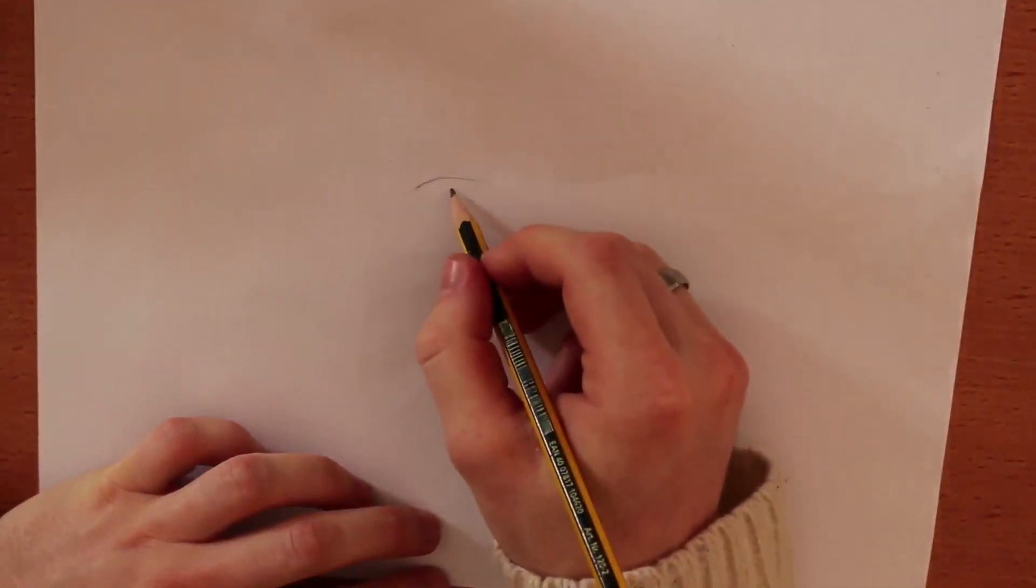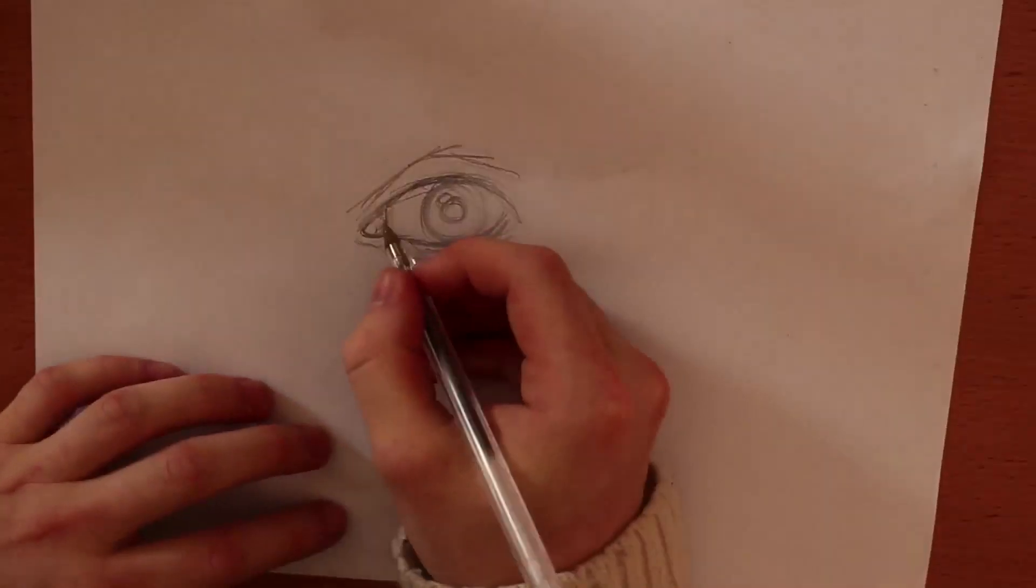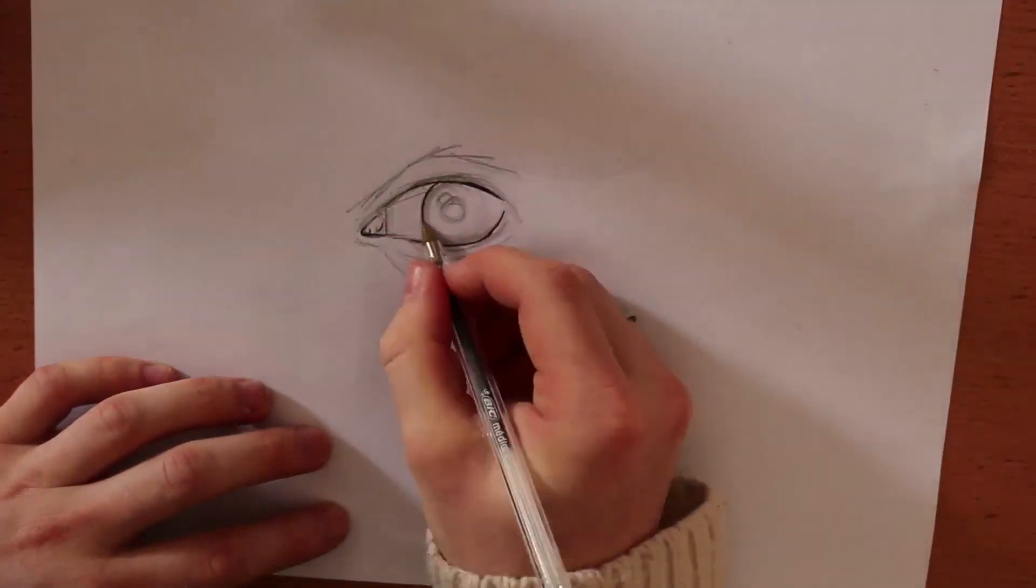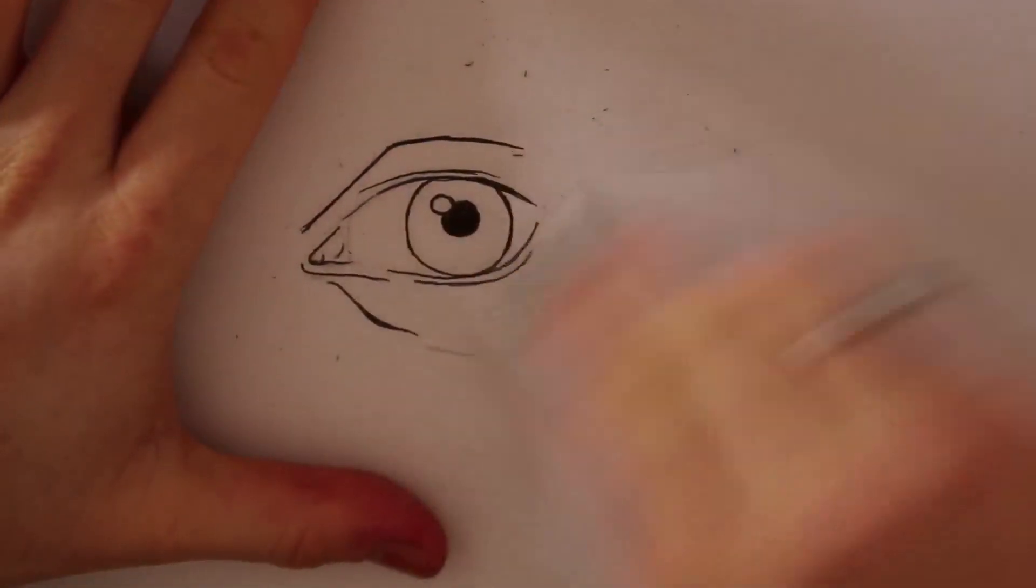However, an advantage to this is that you can still use pencil to do your underdrawing and map out all of the details and proportions. Once you've done your drawing in biro you can easily rub away the pencil marks that are remaining without affecting the biro drawing.